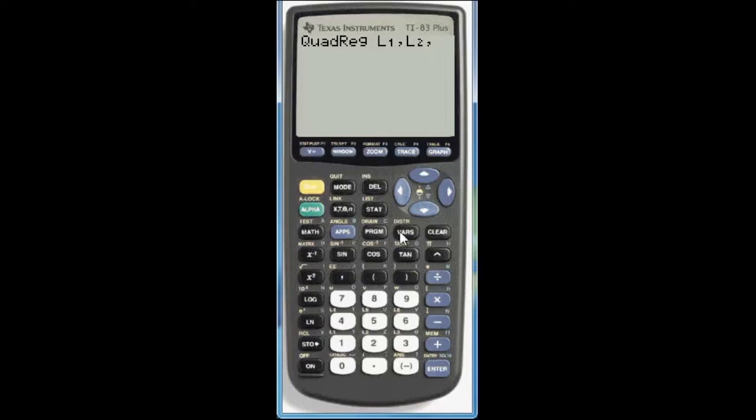Hit the comma again. And now we'll go ahead and have it graph that by entering it automatically into the y equals menu. Press vars. Scroll over to y vars. It's already chosen function so hit enter. And then we'll have it enter the equation into y1. So hit enter. Now once this is on your screen hit enter once again. And it gives you the regression equation.